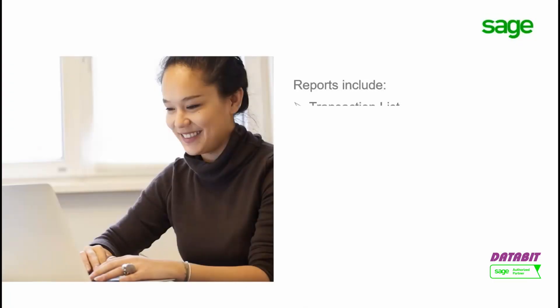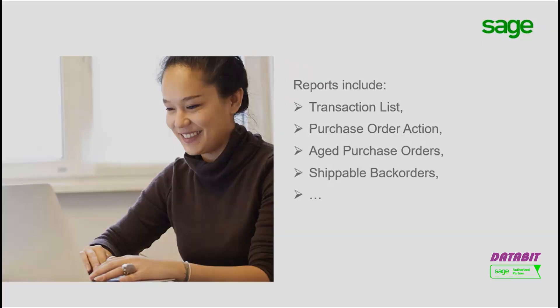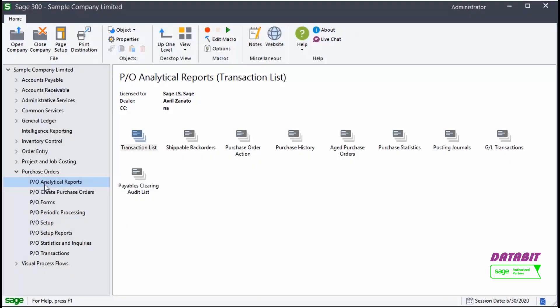Reports include the Transaction Lists, the Order Action, the Aged Purchase Orders, and the Shippable Back Order Reports, to name a few. Let's have a look at some of the commonly used reports, beginning with the Transaction List Report.